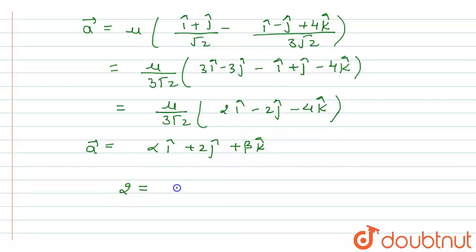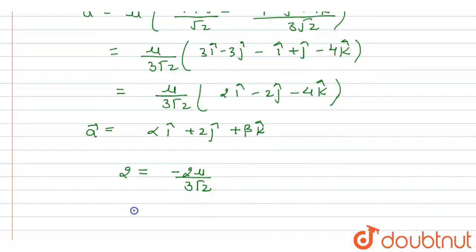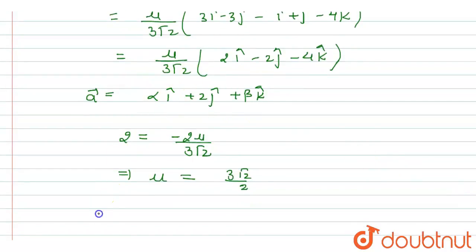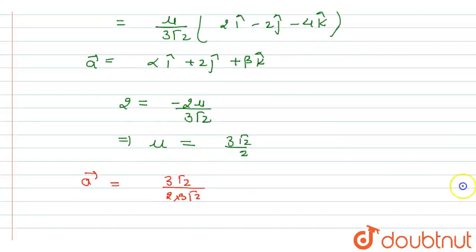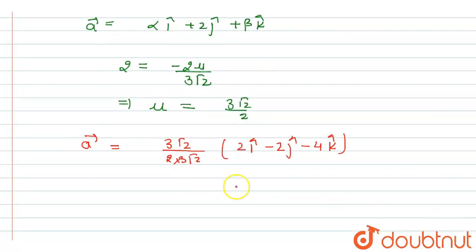Since the coefficient of ĵ is 2 and it equals −2μ/(3√2), we get μ = −3√2/2. Substituting this value of μ, the final value of vector a is (−3√2/2) × (1/(3√2)) × (2î − 2ĵ − 4k̂), which simplifies to î − ĵ − 2k̂.